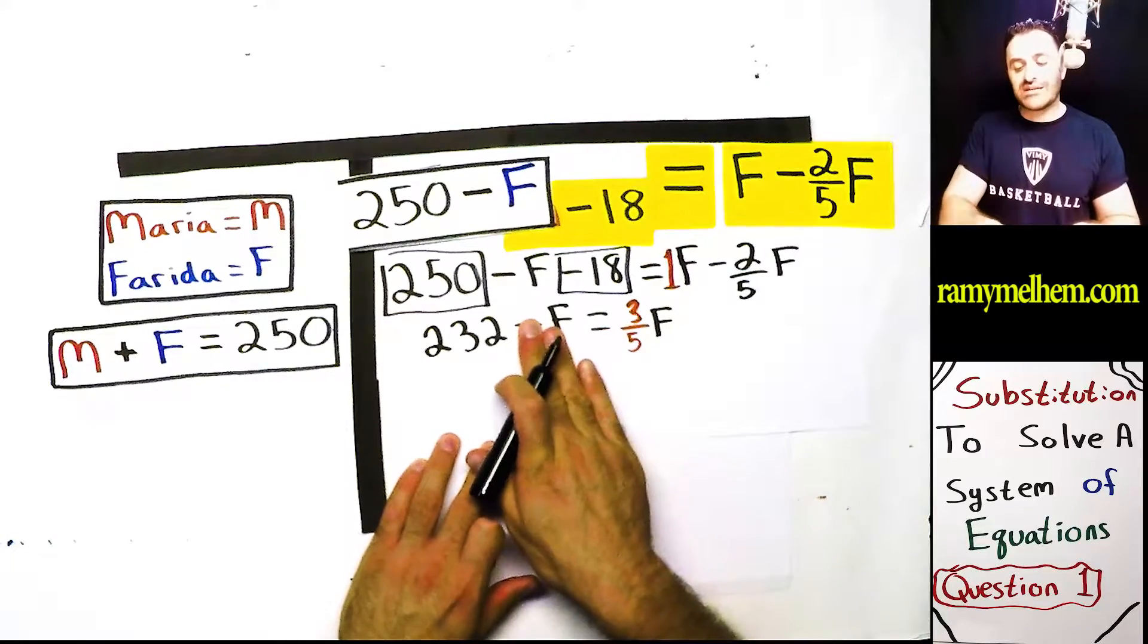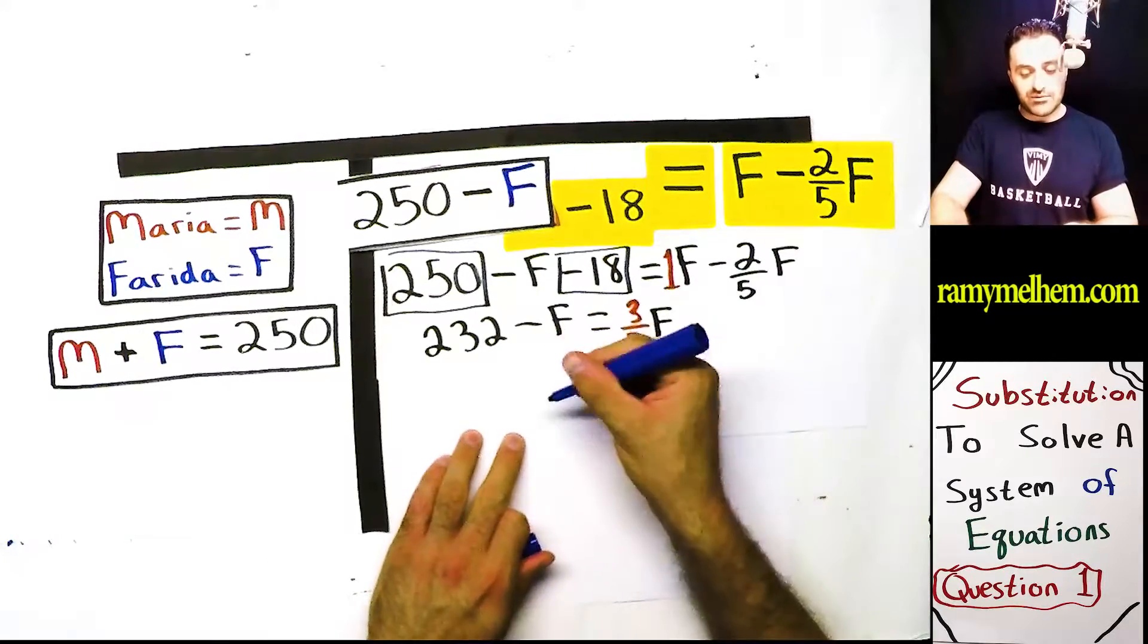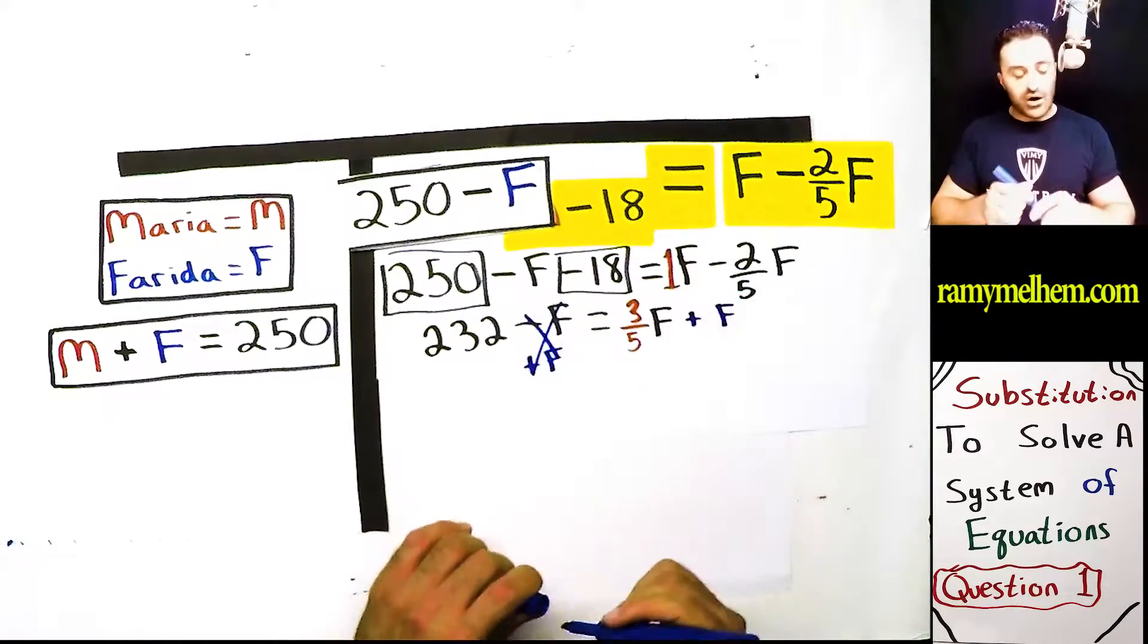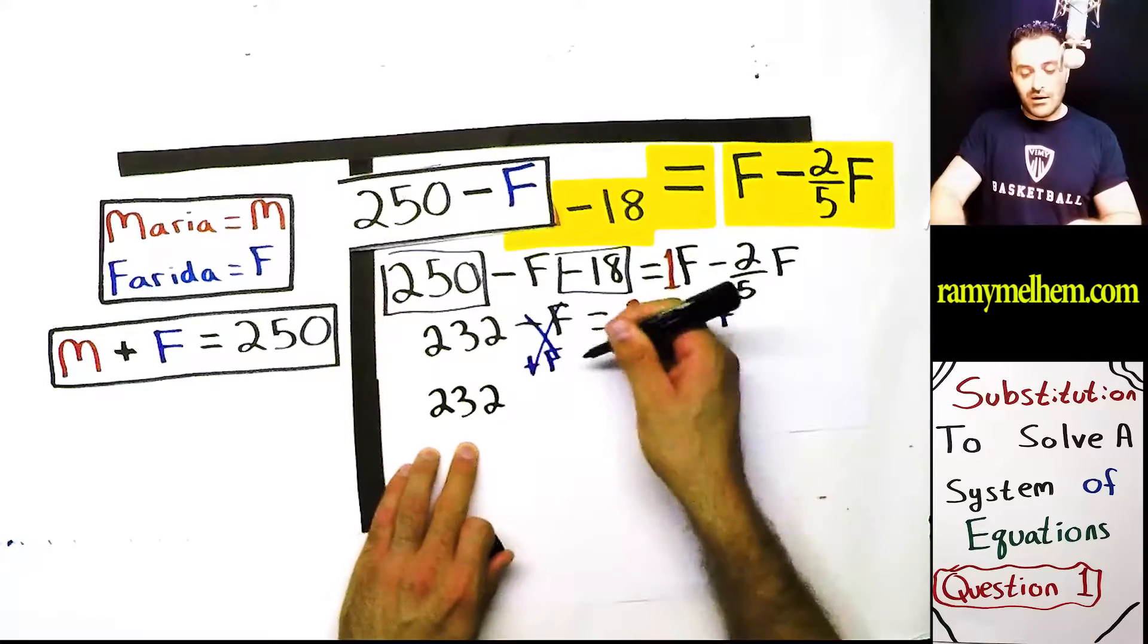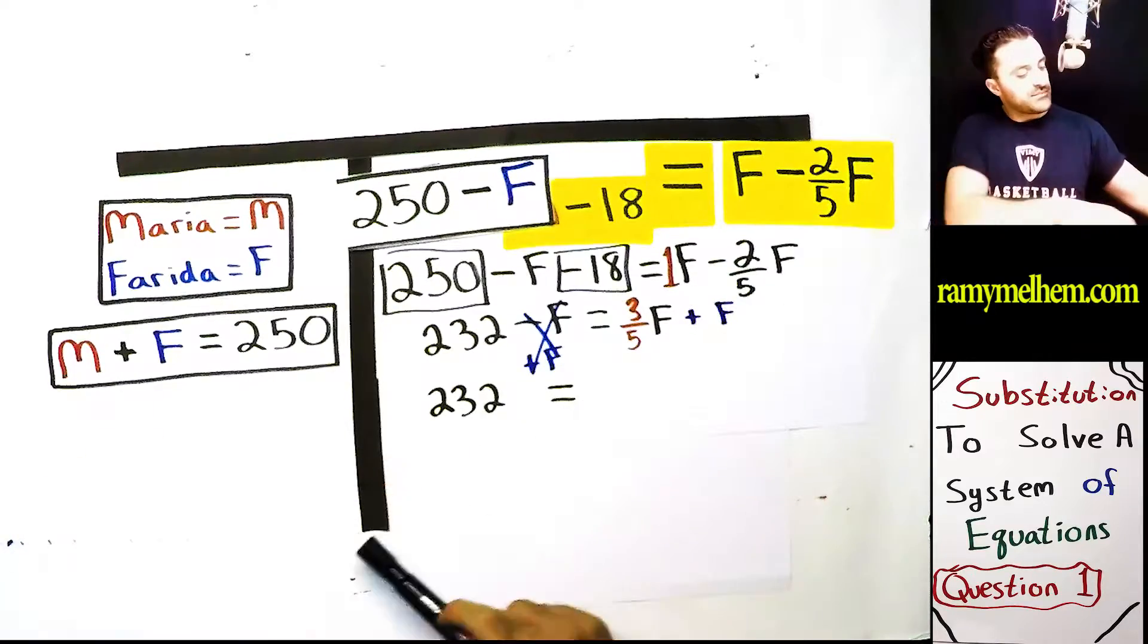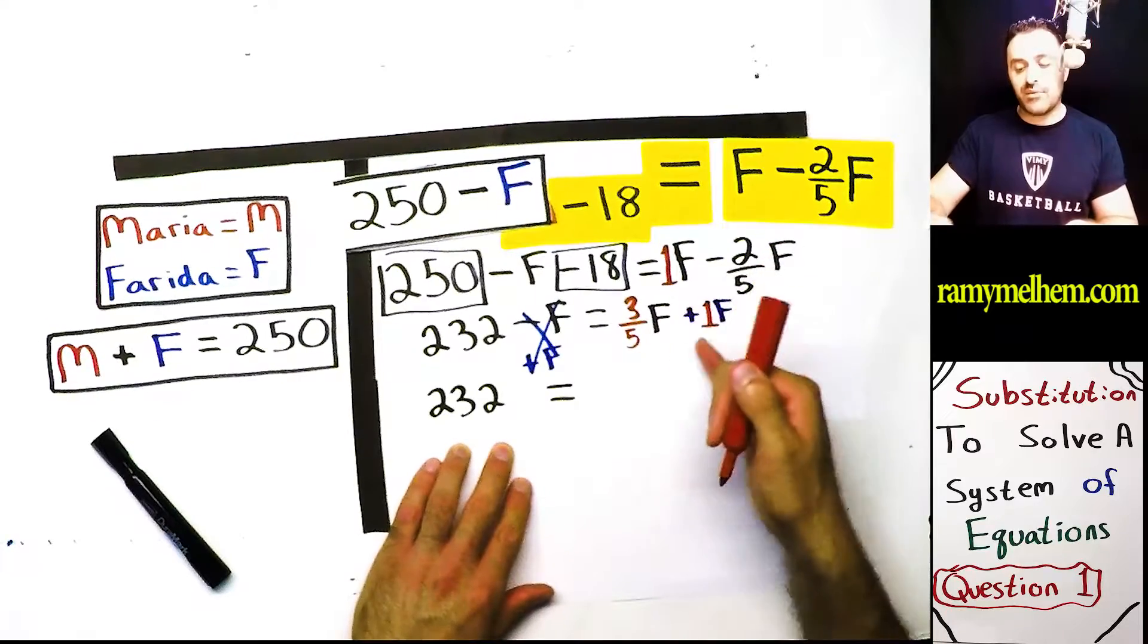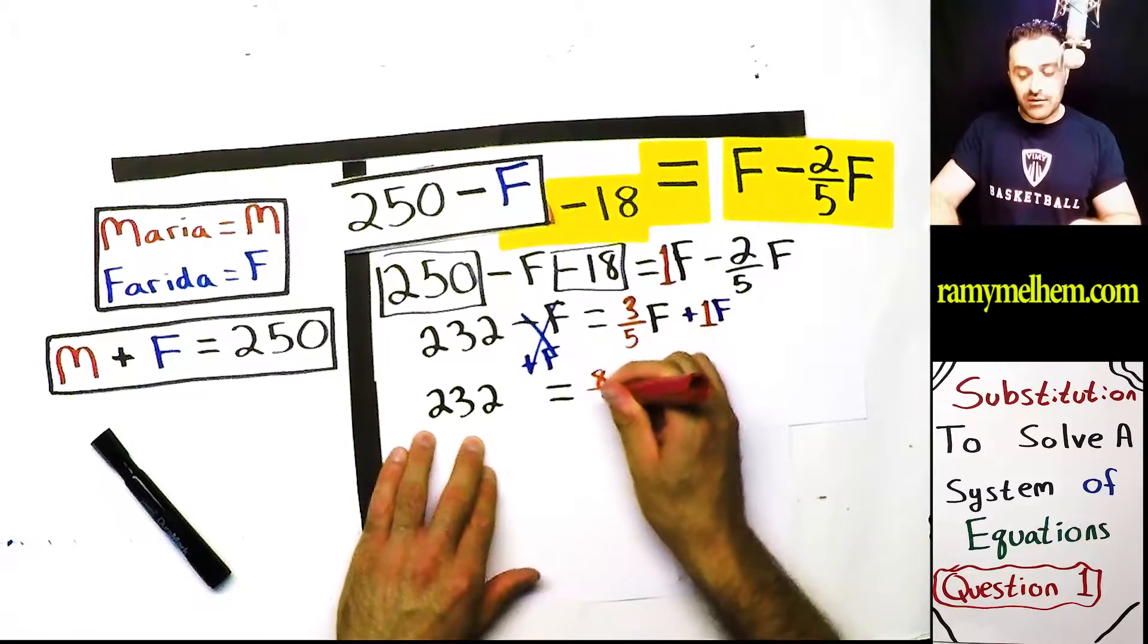Okay, we got to combine these F's. Look, we have an F on the left side or a negative F, and we have an F on the right side. Let's combine them together. So we have to eliminate this one. We'll go plus F. And on this side, we'll go plus F. So now what do we have? Well, these are eliminated. So all I have left on the left side is going to be 232. Equals. Now look at the right side. Ignore the F's. Look at the numbers. The coefficients. Right? This is a one. What's three-fifths plus one whole? You know one whole is five over five. Keep the denominators the same. Five over five plus three over five is eight over five. So we're going to write eight over five, F.